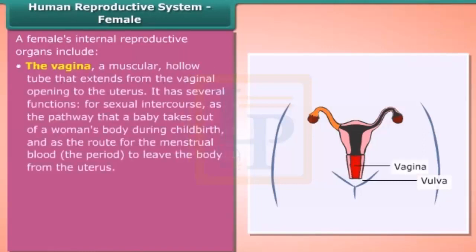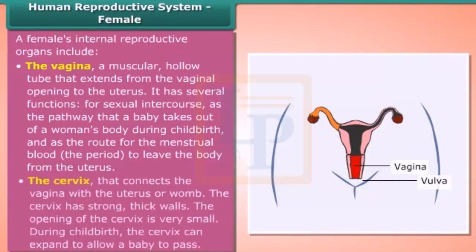A female's internal reproductive organs include the vagina, a muscular hollow tube that extends from the vaginal opening to the uterus. It serves several functions: as the pathway for sexual intercourse, as the pathway a baby takes out of a woman's body during childbirth, and as the route for menstrual blood to leave the body from the uterus.